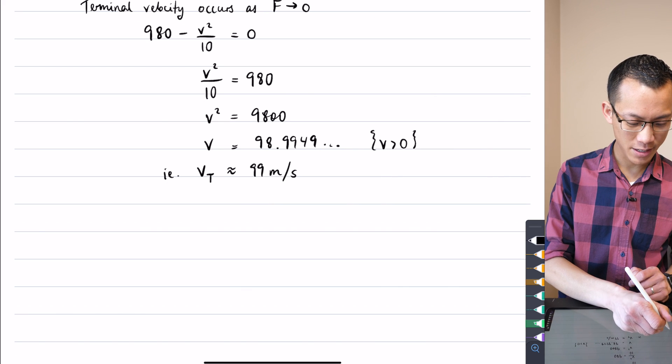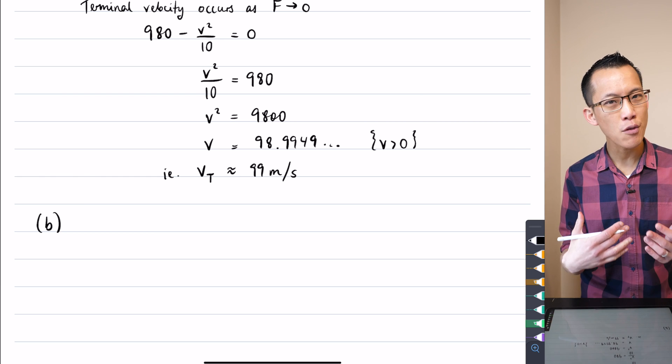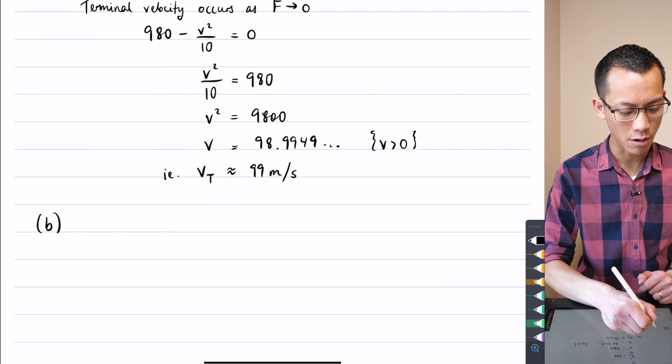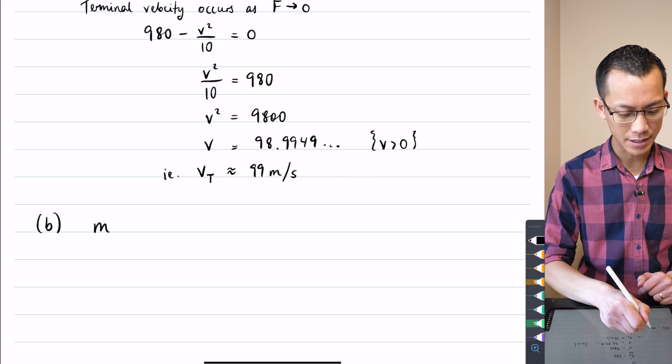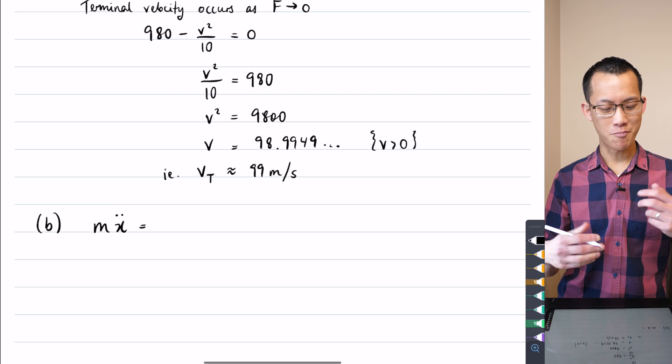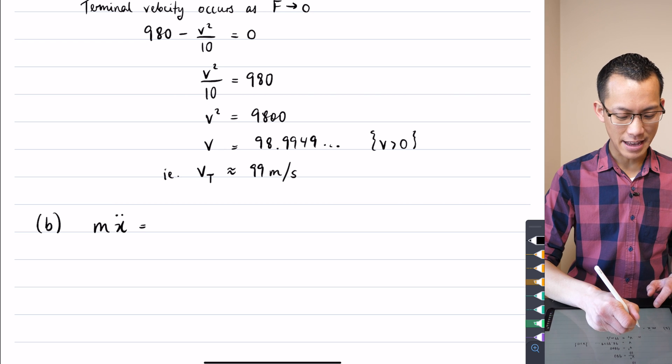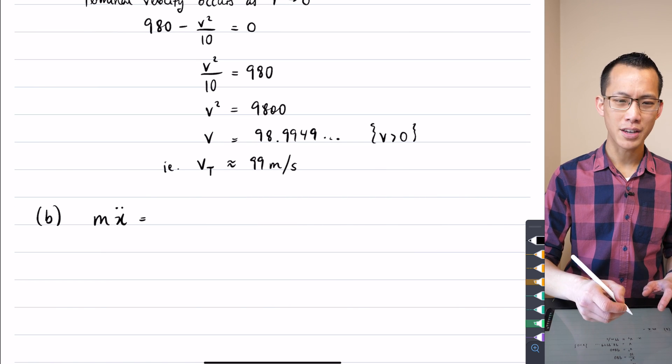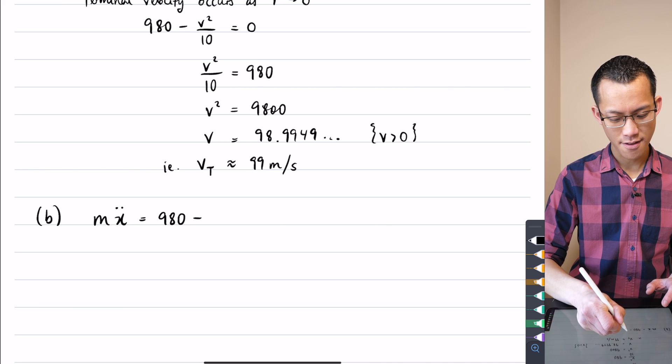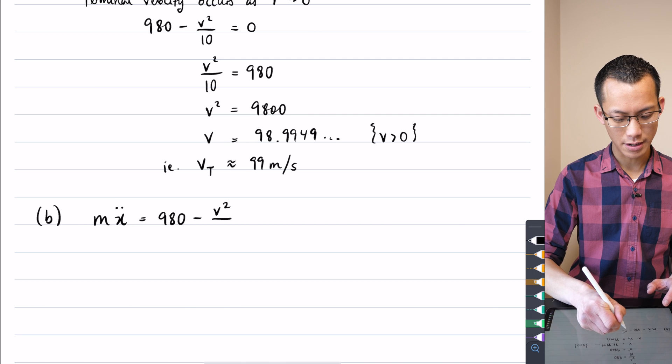because you're never going to solve this equation and get x equals 511 because there are no x's here to begin with. So therefore, let's write this part b. Instead of writing force, f for force, I'm going to say force is mass times acceleration, so I'll write that as m times x double dot. That's equal to 980 take away v squared on 10.